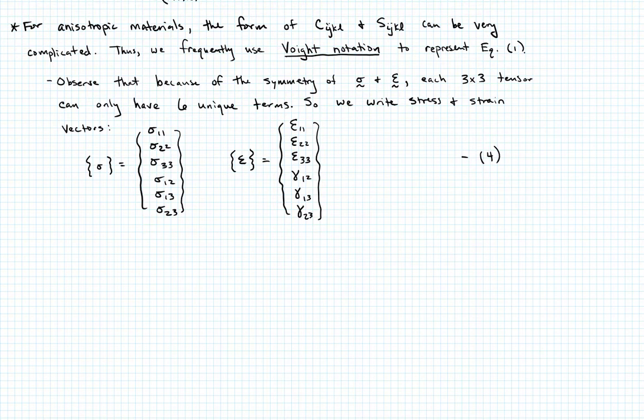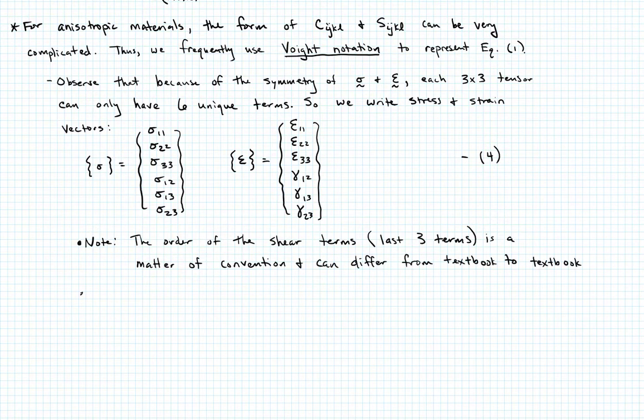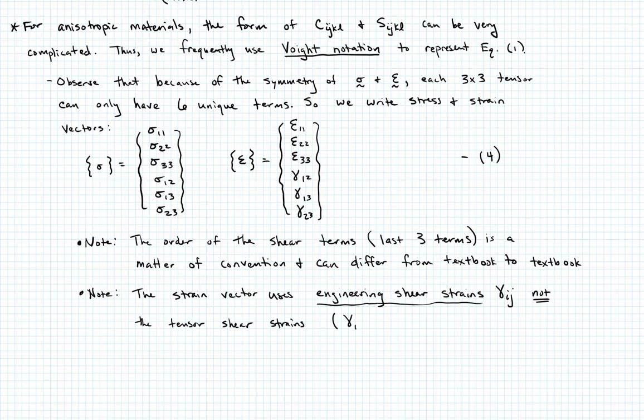I'm going to make two notes about this. The order of those shear terms, the last three terms in each of these vectors, it's a matter of convention, and so what that means is it can differ from textbook to textbook. The other point I want to make is that the strain vector uses engineering shear strains, gamma_ij, not the tensor shear strains. And you can remember that they're related. Gamma_ij is equal to 2 times epsilon_ij. That's the relationship between engineering shear strain and the tensor shear strain.